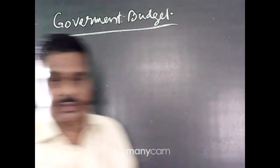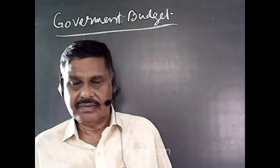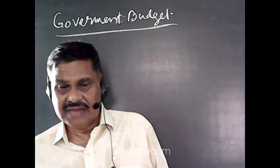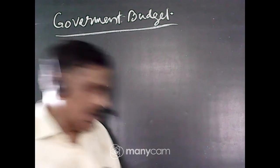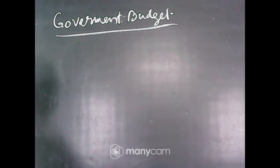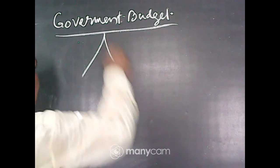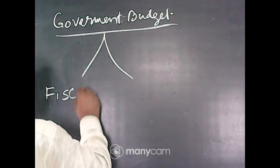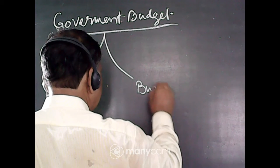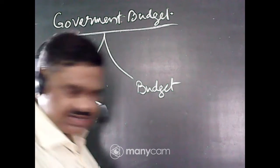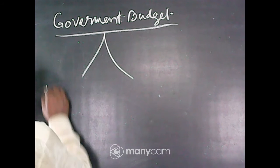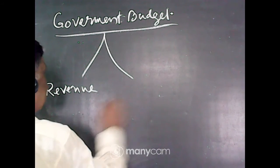In India, on 1st February of the new year, the finance minister declares the budget for the financial year. The budget has two sides: one is fiscal and another is budgetary policy. It can also be expressed as the revenue aspect and the expenditure aspect.